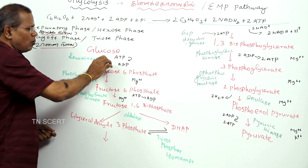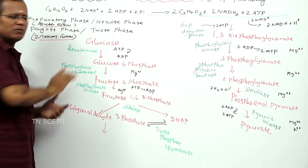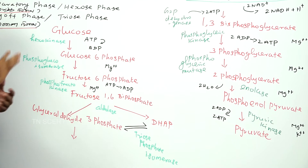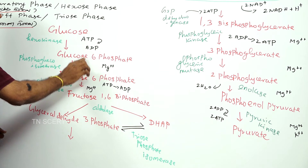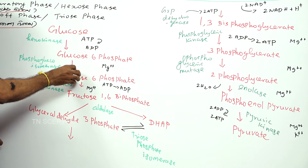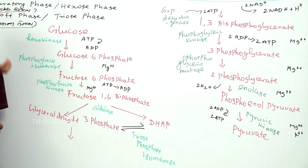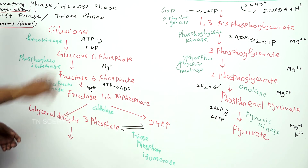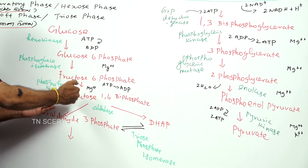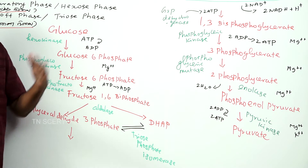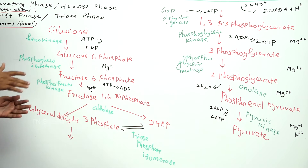Glucose is phosphorylated to form glucose 6-phosphate. Glucose 6-phosphate is converted into fructose 6-phosphate through isomerization, with the help of the enzyme phosphoglucoisomerase. Fructose 6-phosphate is then phosphorylated to form fructose 1,6-bisphosphate, with the help of the enzyme phosphofructokinase.